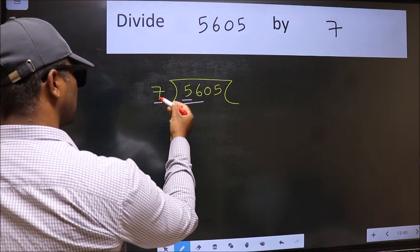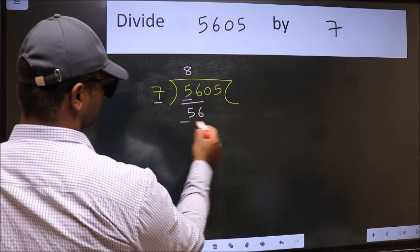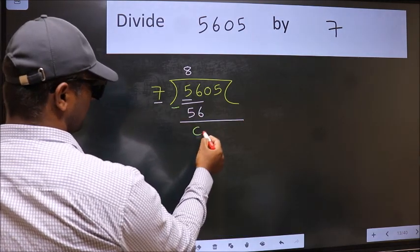When do we get 56 in the 7 table? 7 times 8 is 56. Now we should subtract. We get 0.